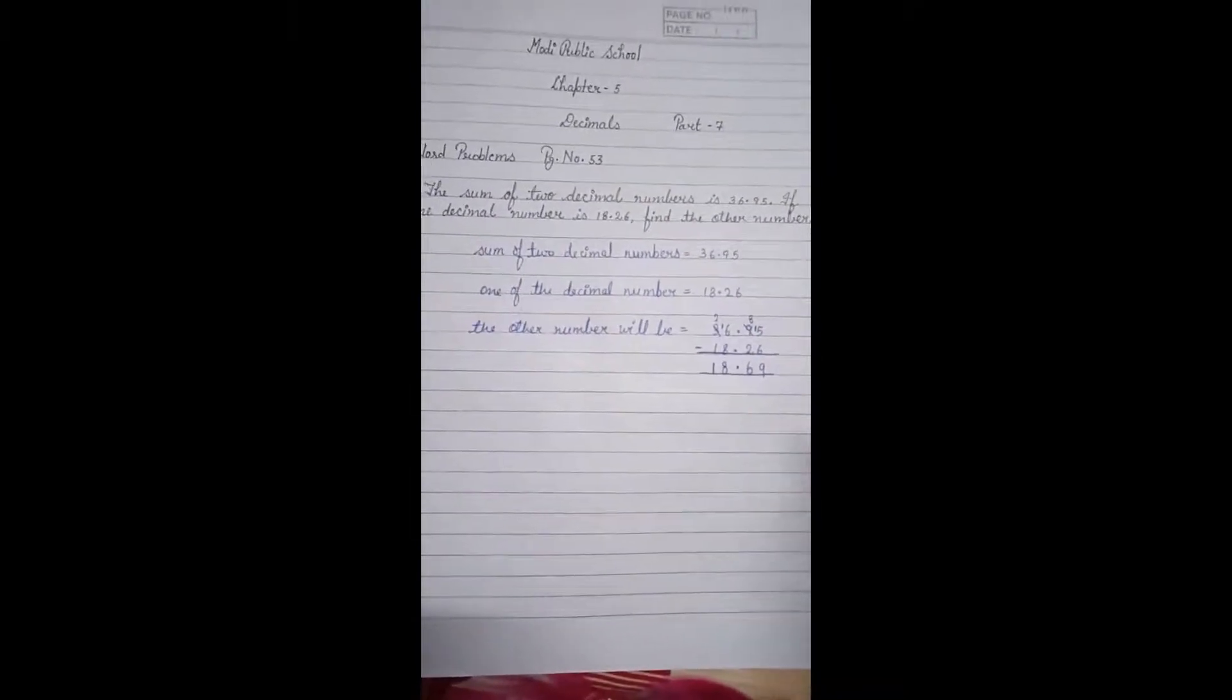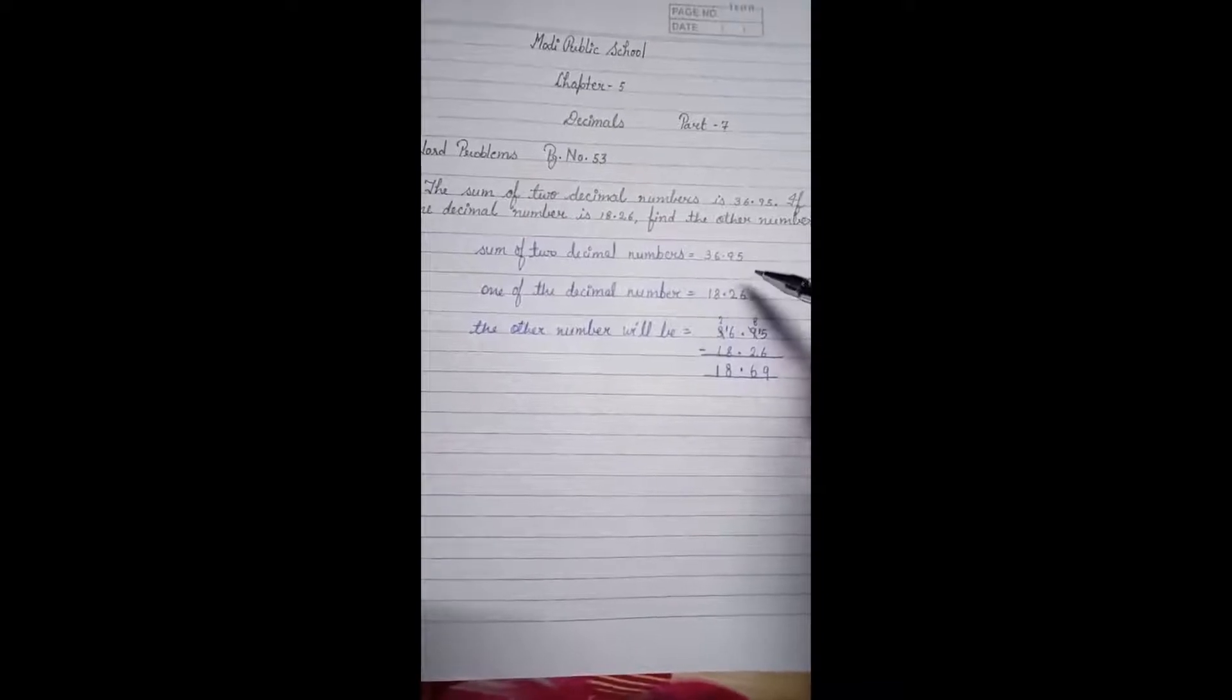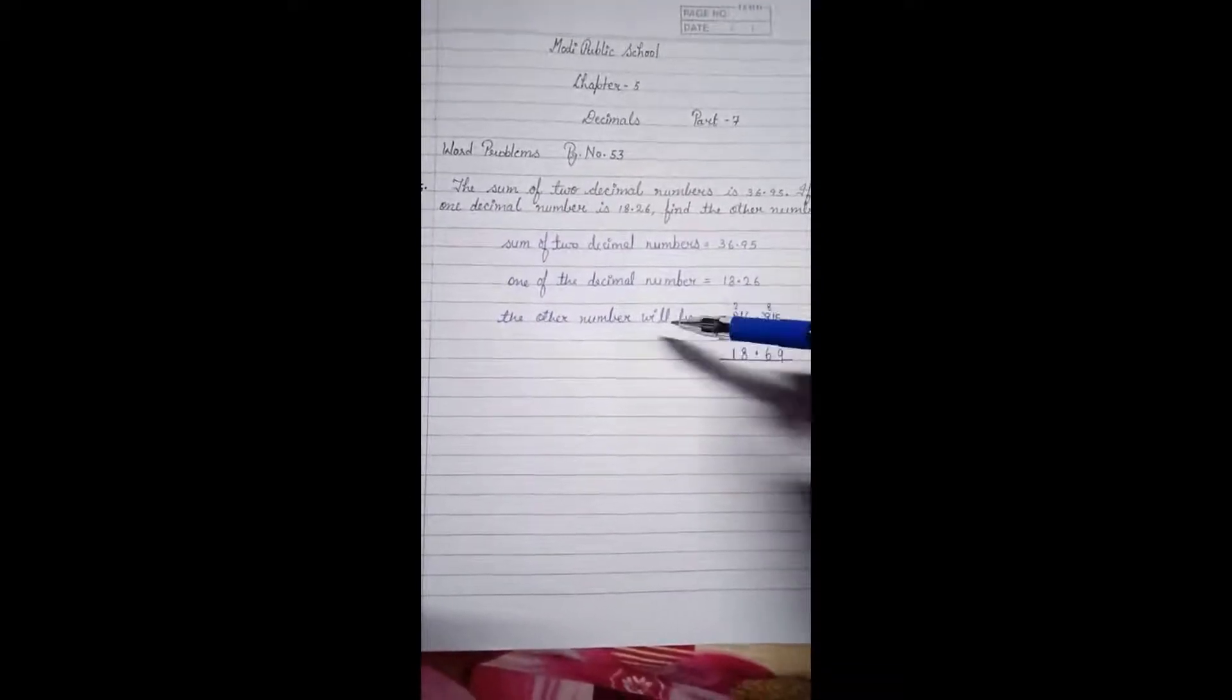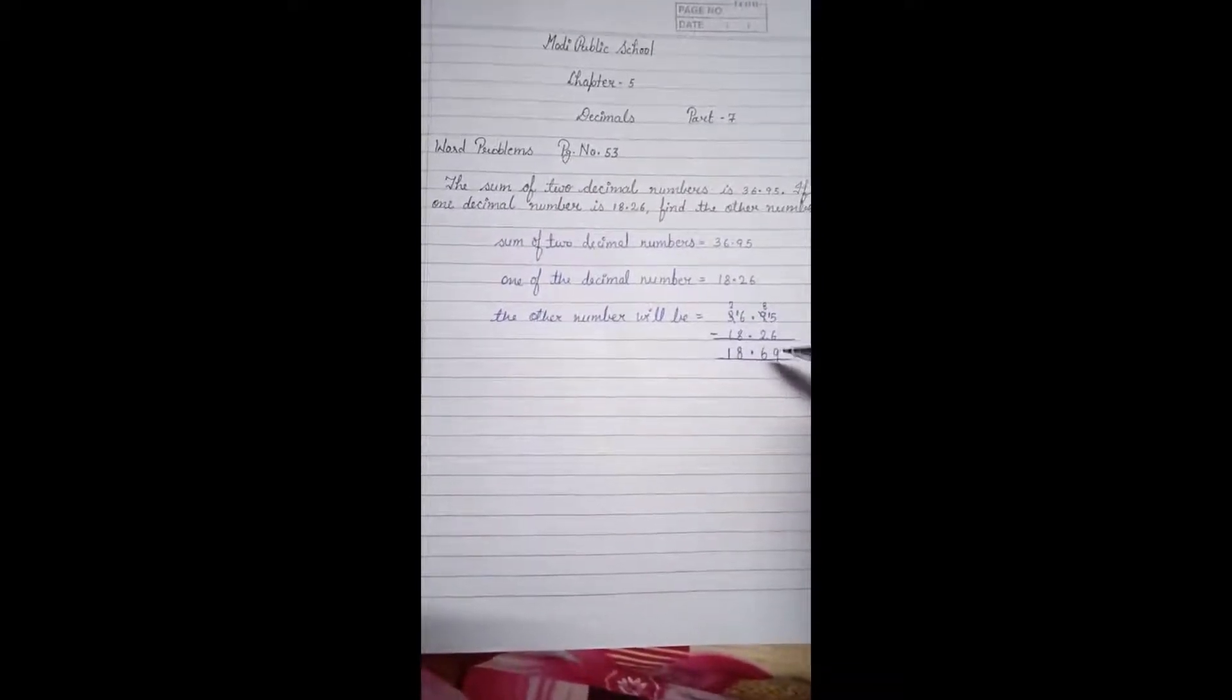Here if the two decimal numbers sum is 36.95 and one of the number is 18.26, the other number is 18.69.